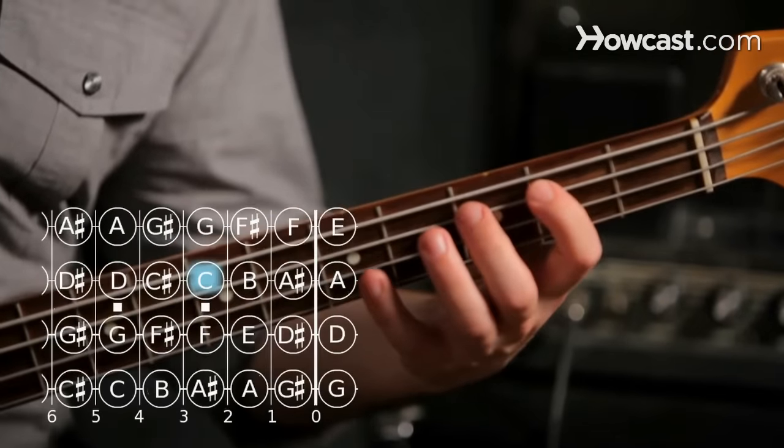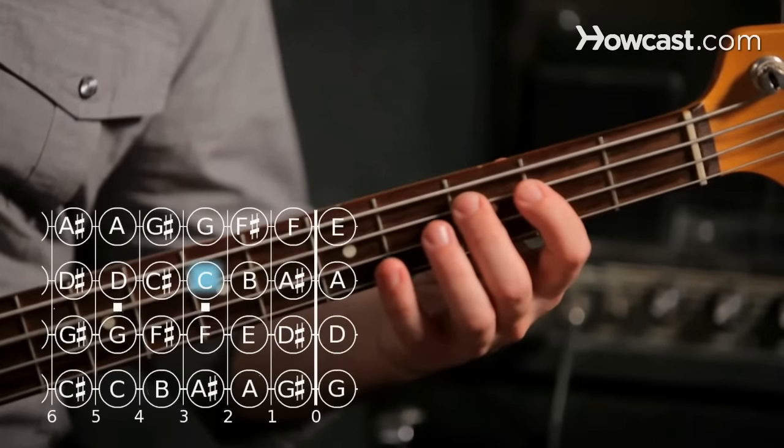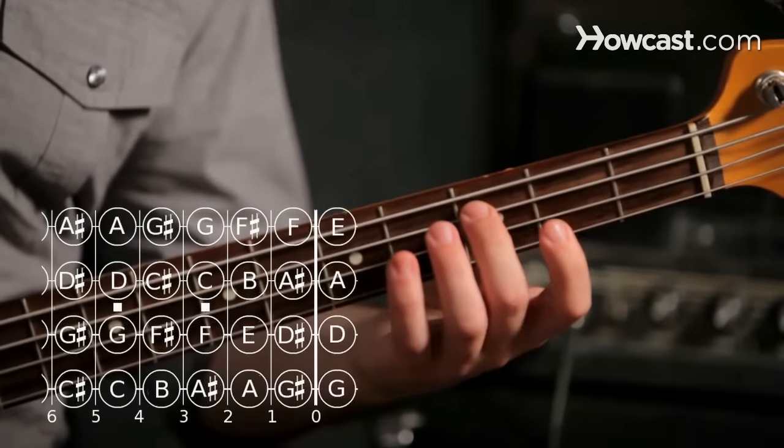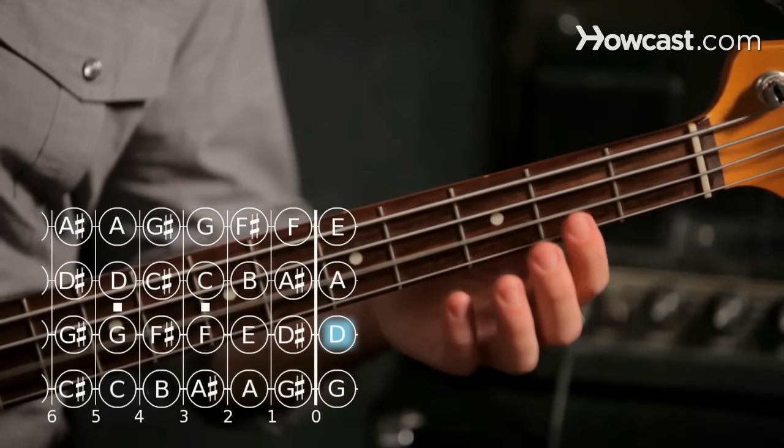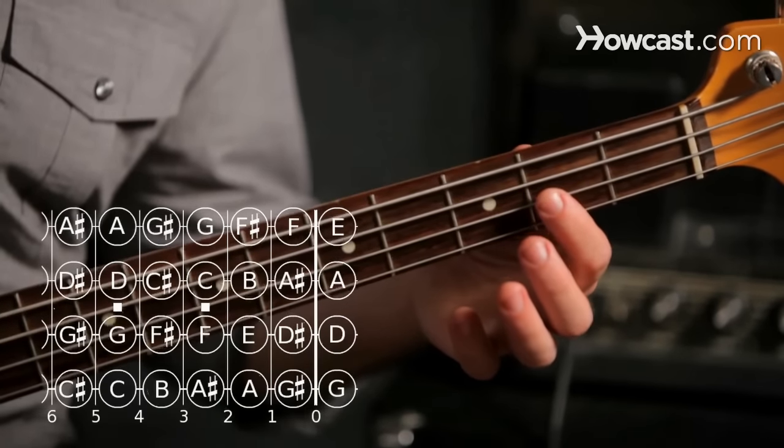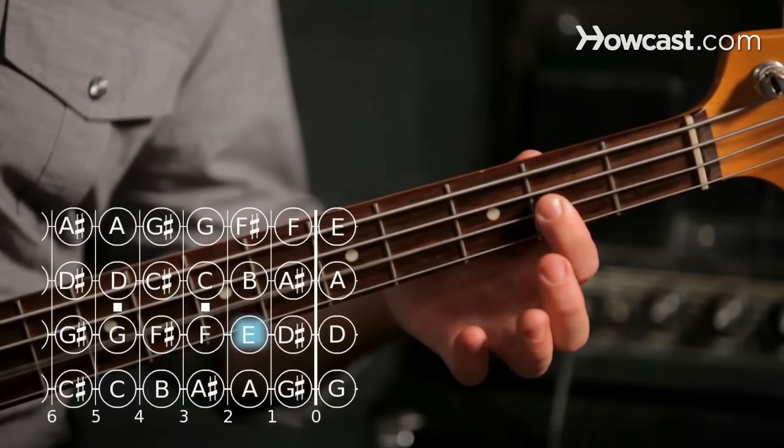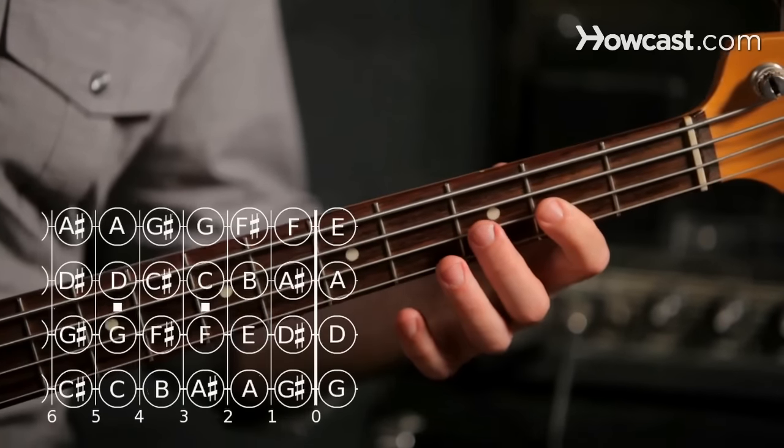C is the third fret on the A string. We play the open D, one string away. We play E, second fret on the D string. F is the third fret on the D string.